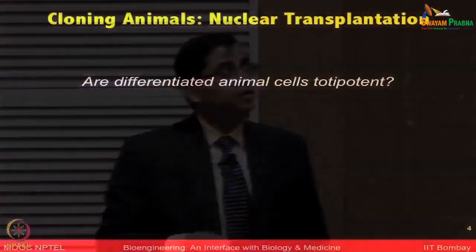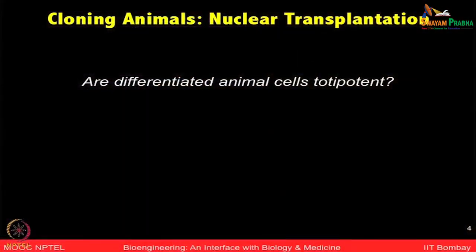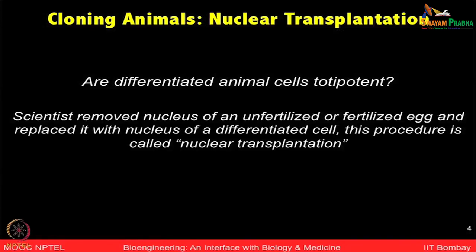If you have not cloned a plant, that is a small experiment you can try yourself. Animal cloning is a much more tedious process — many things have to be controlled for a full animal to be made. Nuclear transplantation is one concept that aims to look at whether the same type of concept can be used for animal cells. Are animal cells totipotent? Can they be converted into any type of cell? Scientists tried experiments using unfertilized and fertilized eggs, trying to replace the nucleus with that of differentiated cells to test out this hypothesis.